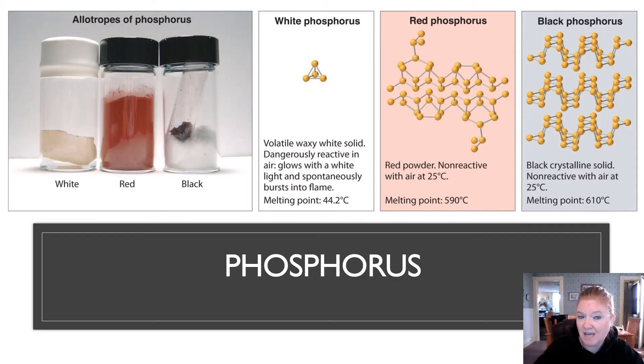Phosphorus, three main types. White, red, and black. White phosphorus is volatile. Spontaneously bursts into flame. Black is a crystalline solid, non-reactive with air. Red phosphorus or red powder, non-reactive with air. You can see the differences in their melting points here. So again, allotropes, they're all phosphorus. They don't contain other atoms of different elements. But you can see their structures are different. So look at the structure of white phosphorus compared to the structure of red phosphorus compared to the structure of black phosphorus. Different structures lead to different properties. That's allotropes.